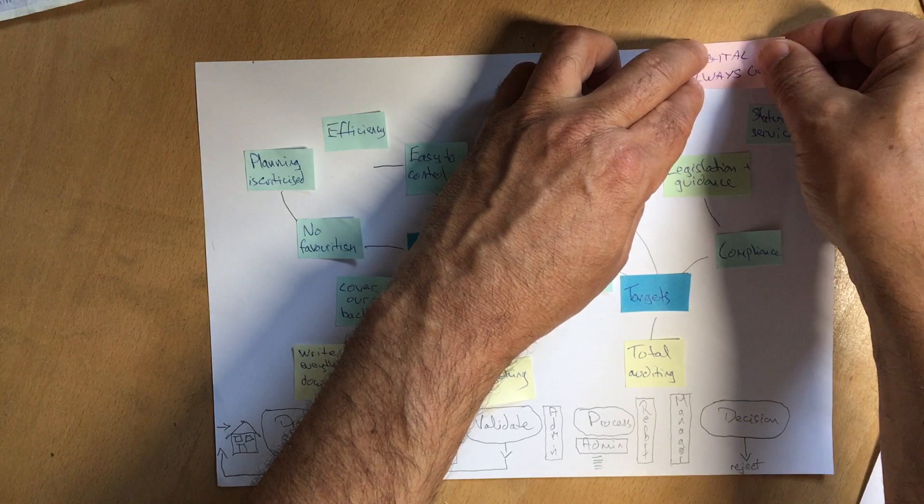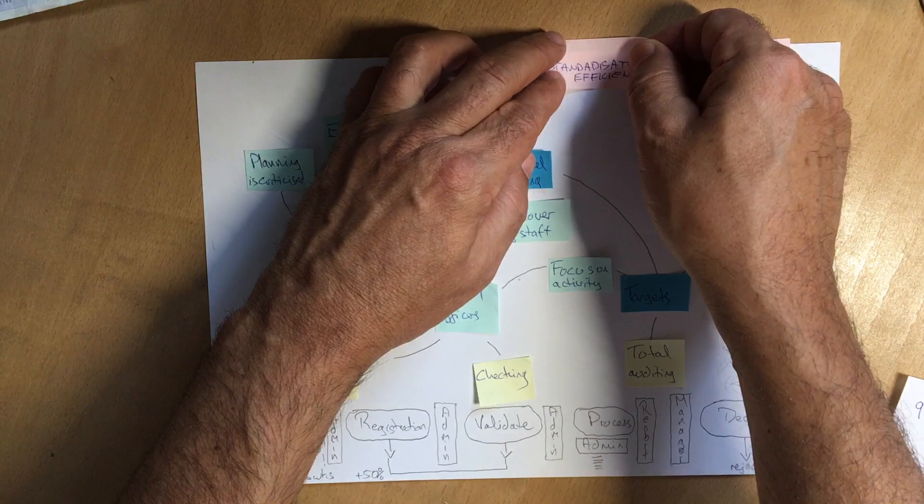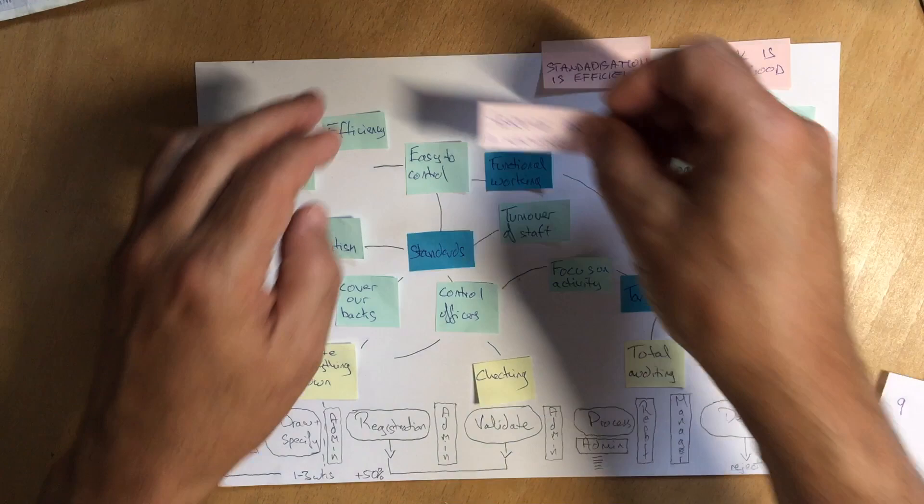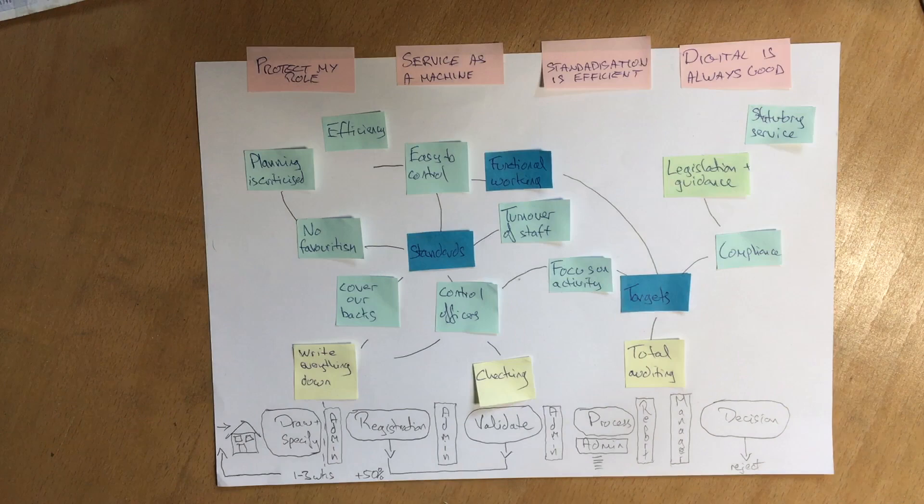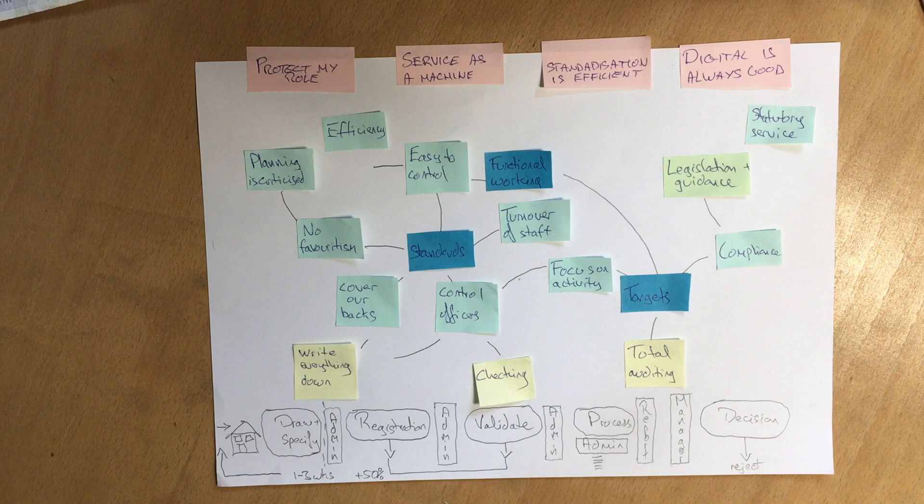Standardisation. This is about standardisation making the service efficient. This is about understanding the service as a machine. And this is about protecting myself as a manager within the organisation. So that when we get criticism and when we get feedback, we can always say that we did it that way because we followed our rules.